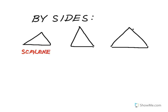A scalene triangle has no sides congruent. If I have two or more sides congruent — generally two sides congruent — it's an isosceles triangle.